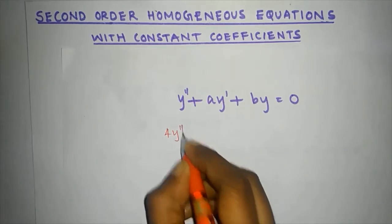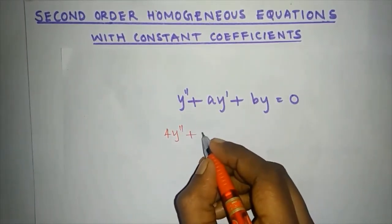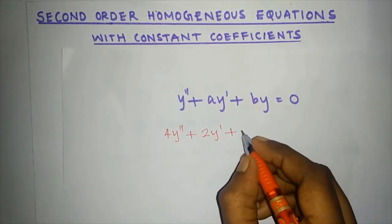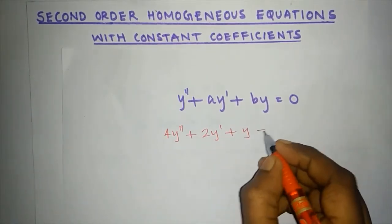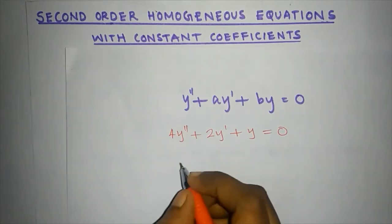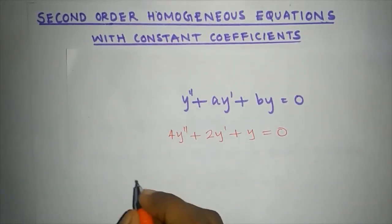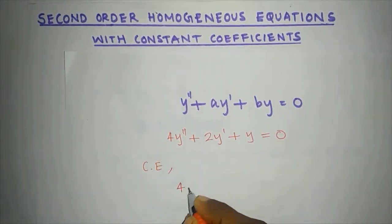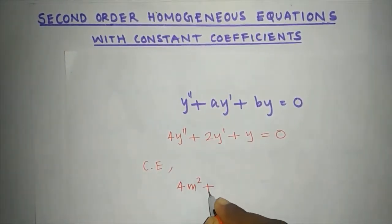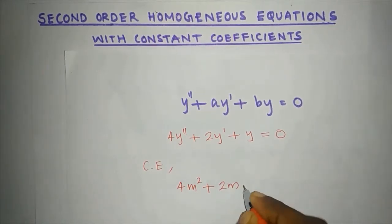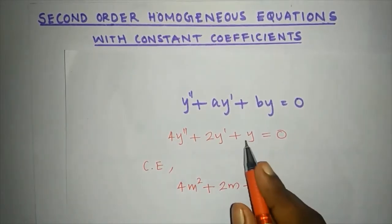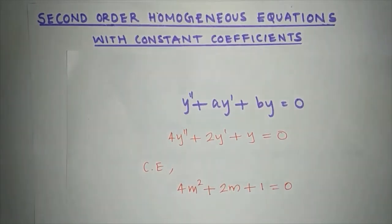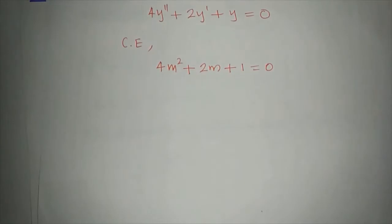Now we will take an example. Example: 4y'' plus 2y' plus y equals 0. In this case, the characteristic equation is: 4m squared plus 2m plus 1 equals 0, where the coefficient of y'' is 4, y' is 2, and y is 1.